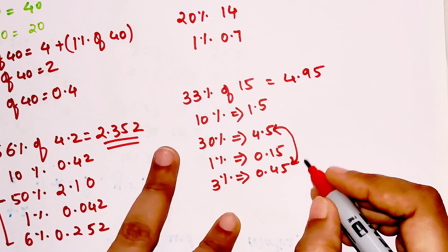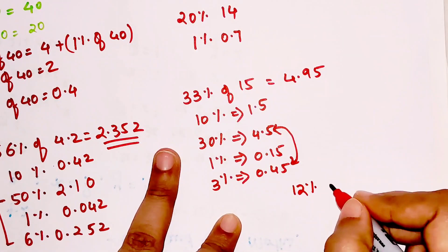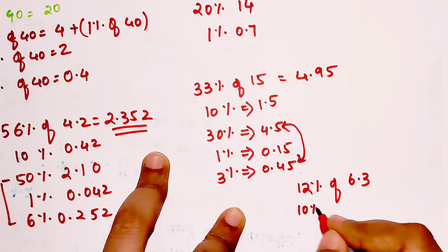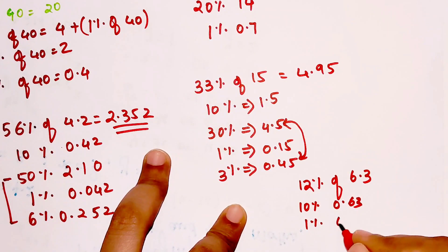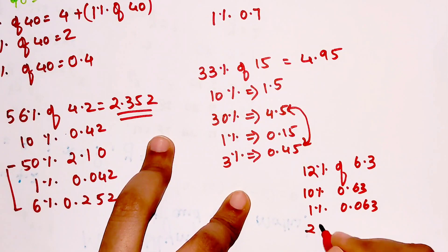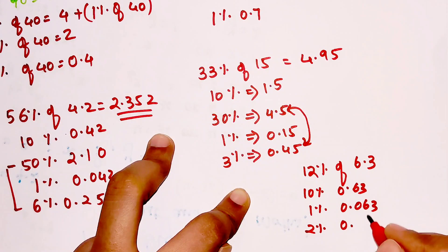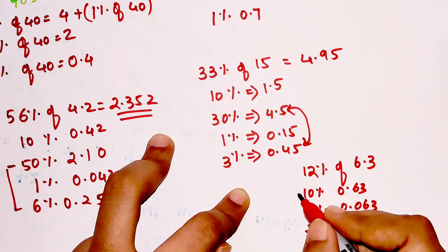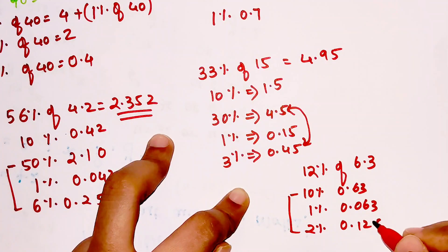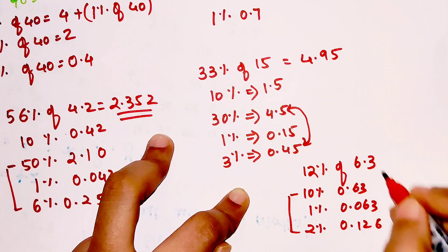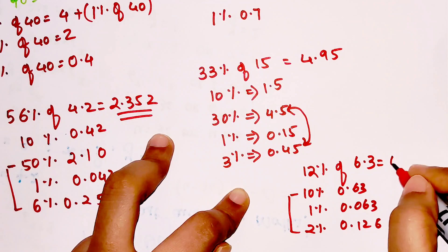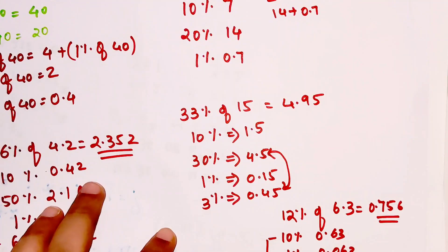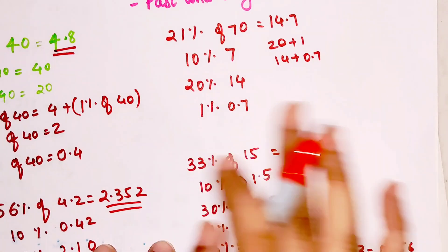Let's look at 12% of 6.3 very quickly. 10% is 0.63, so 1% will be 0.063, so 2% will be 0.126. So we just have to add 0.63 with 0.126, so when you add these two your answer now becomes 0.756. So I hope you are getting the hang of it.